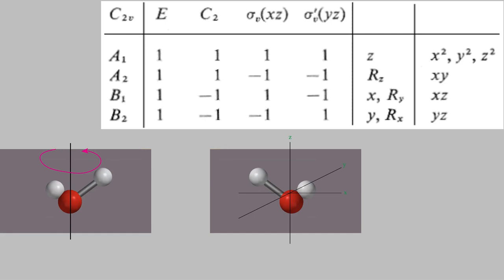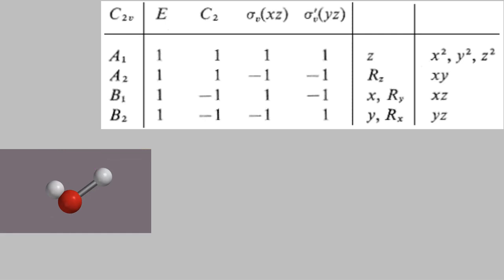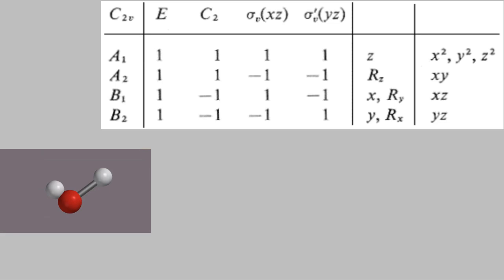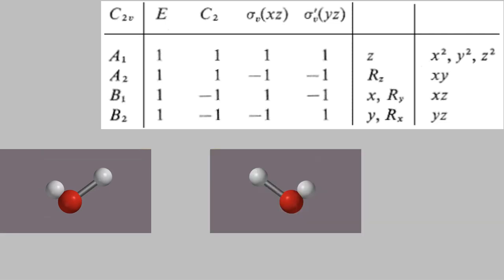Next, let's look at the reflection in the XZ plane. This leaves the molecule looking the same as it did before the reflection. And finally, let's look at the reflection in the YZ plane. This causes the long and short bonds of the molecule to switch places, just as was the case for the C2 rotation we performed earlier. That means we'll have to multiply the X coordinate by negative one in this case.